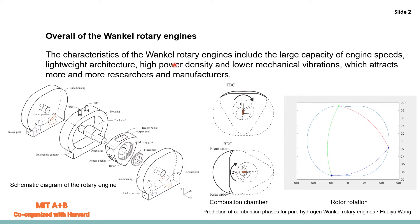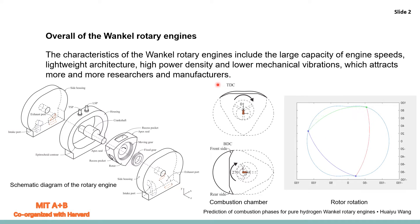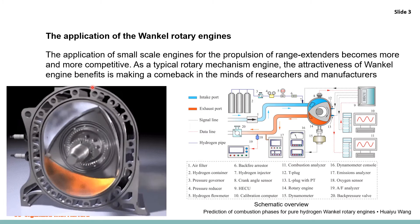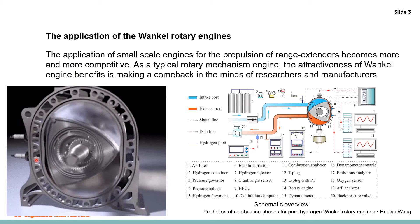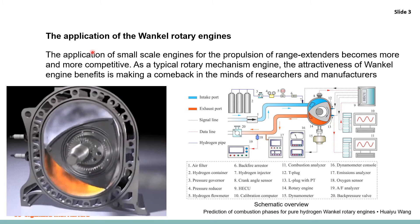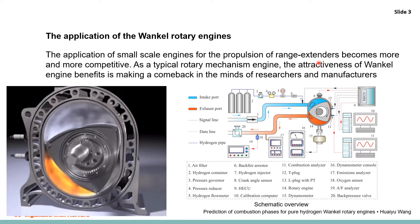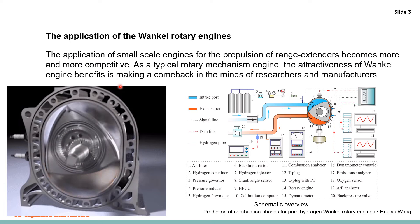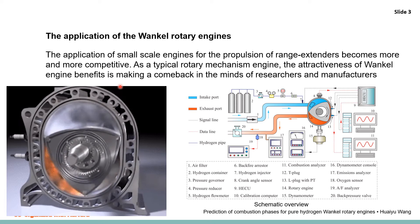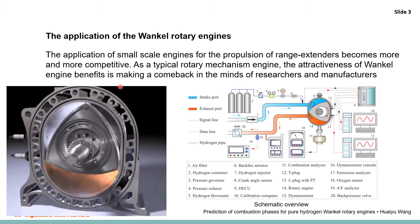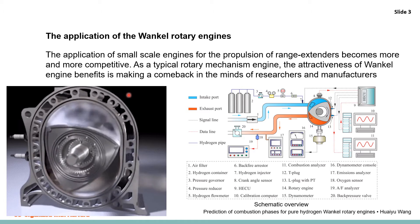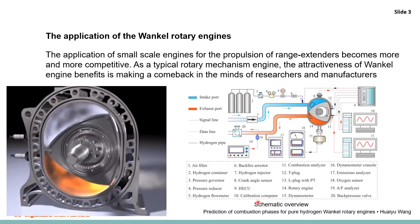The characteristics of the Wankel rotary engine include a large capable energy speed, lightweight architecture, high power density, and low mechanical vibration. This is the classical rotary engine with two spark plugs. The application of small-scale engines for propulsion of UAV systems has become more and more competitive. As a typical rotary engine, the attractiveness is making a comeback among small aircraft manufacturers. This is the testing bench of our laboratory.